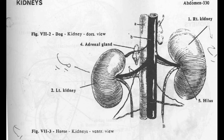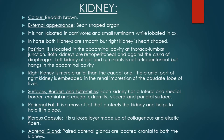Kidneys are retroperitoneal organs and are found always in the form of pairs. The right kidney is more cranial than the caudal one. The cranial part of the right kidney is embedded in the renal impression of the caudate lobe of the liver. Kidneys are located in the abdominal cavity at the thoracolumbar junction, meaning at the point where thoracic and lumbar vertebrae are joined, kidneys are present there.